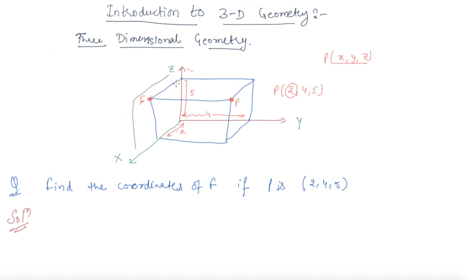For F, the x-coordinate will be 2 similar to P, the y-coordinate will be 0, and the z-coordinate equals the z-coordinate of P. So point F has coordinates (2, 0, 5) if P is given as (2, 4, 5). I hope you now know how to draw a figure in 3D.